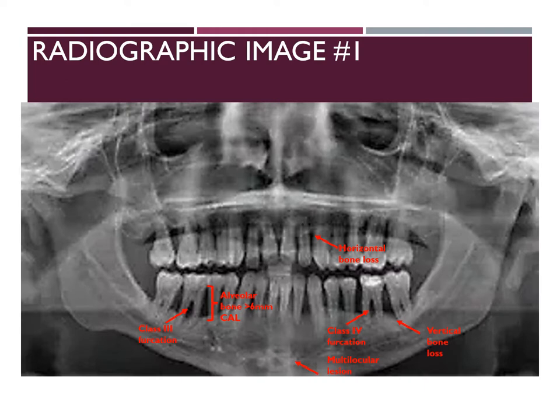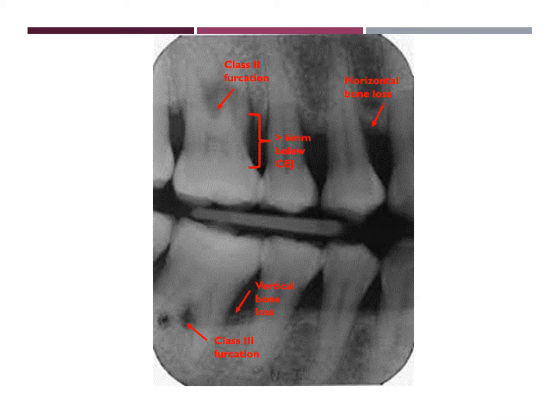As I stated before, there is a multilocular lesion between teeth number 23 and 26. I added another radiographic image so that you can get a better close-up of the radiographic bone loss as well as furcation and clinical attachment loss. In this bitewing, you can see the class 3 furcation on tooth number 30 as well as the class 2 furcation on tooth number 3. On the same tooth, you can see greater than 6 mm below the CEJ. There is horizontal bone loss on the anterior maxillary arch and vertical bone loss closer to the posteriors of the mandibular arch.